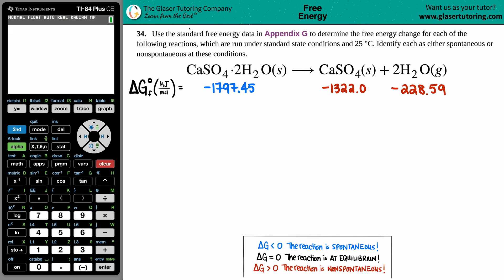Number 34: Use the standard free energy data in Appendix G to determine the free energy change for each of the following reactions, which are run under standard state conditions at 25 degrees Celsius. We have to identify each as either spontaneous or non-spontaneous. We have our balanced reaction: CaSO₄·2H₂O(s) yields CaSO₄(s) plus 2H₂O(g).